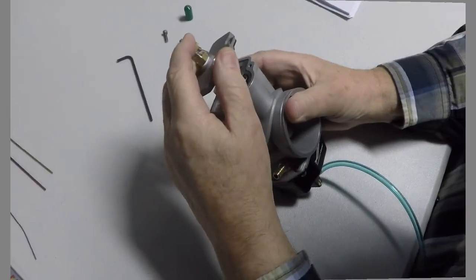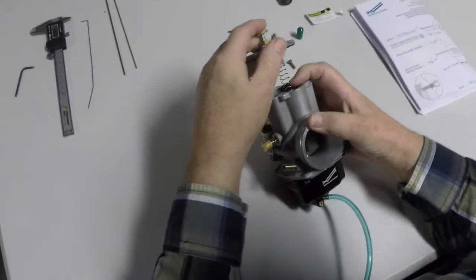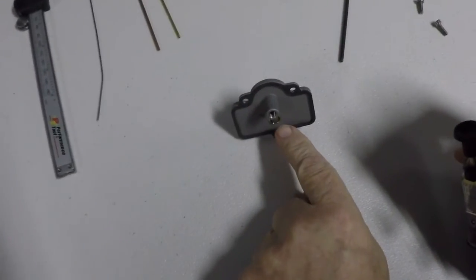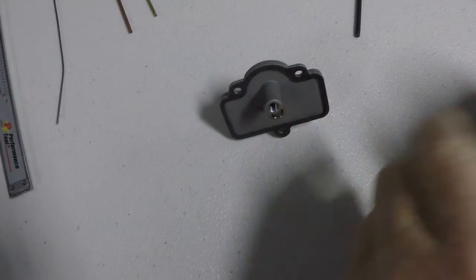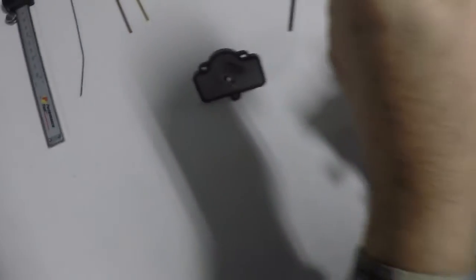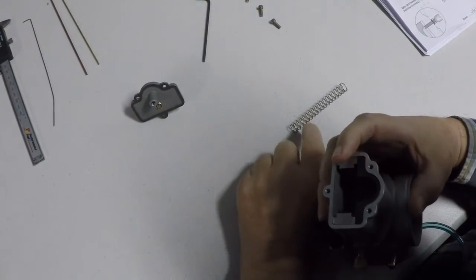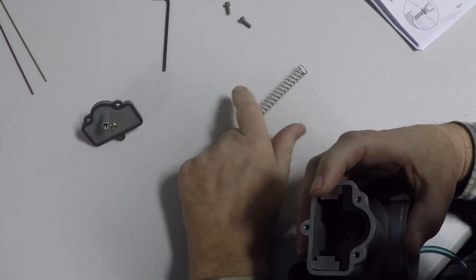So we're pulling the cap off here. There's the cap. This little thing right here is part of the clicker mechanism. We'll go over that in just a minute. There's the spring, and it's nice and straight. If it was bent, it would be wobbling.